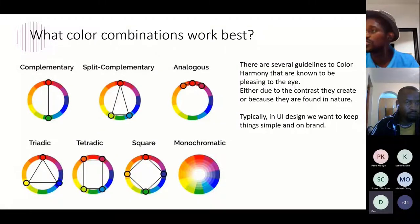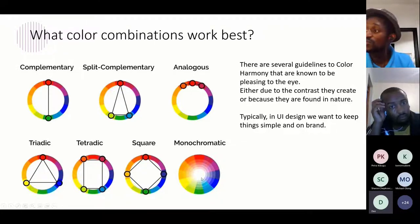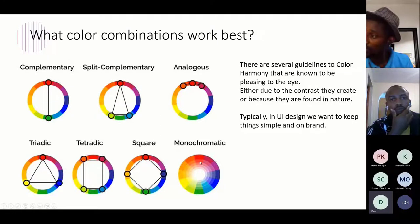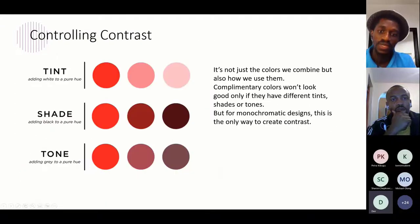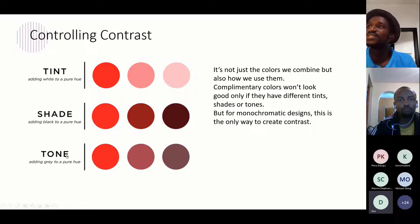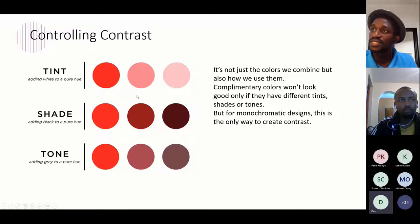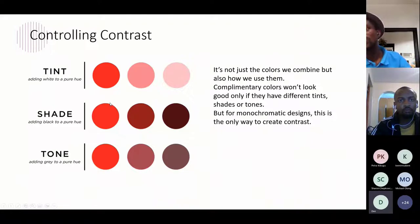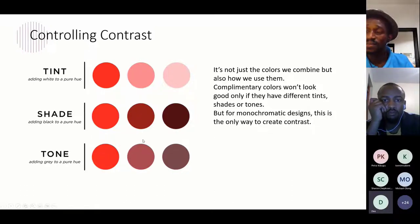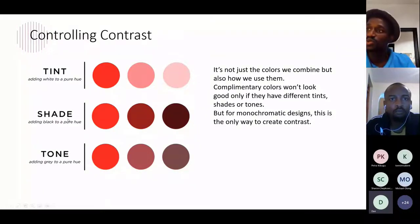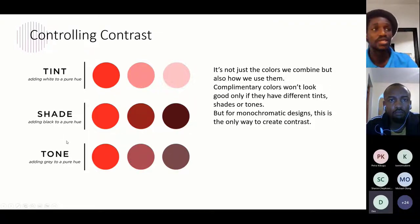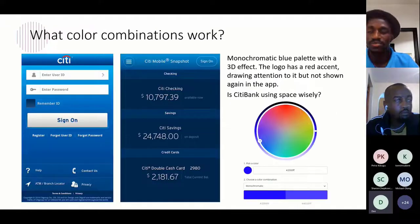When you select a key color, you may decide to generate a tone, shade, or tint for that color. For example, if you use a color on a button, when the mouse hovers over the button it should be deeper — so you use a shade to make it a deeper color on the hover state. Tint, shade, and tone are how you control the contrast of the app. Let's look at examples of apps designed with a monochromatic color palette.